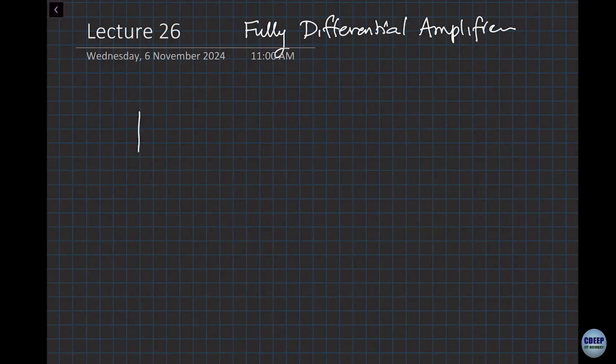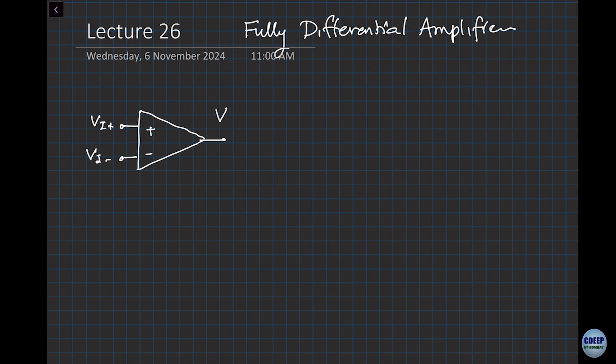If you look at a standard differential amplifier we've learned so far, we had V input plus and V input minus, and then one V output. In this case, the input common mode is rejected. What rejects it? The very foundation — the differential pair — will reject it. And we have a single-ended output, which we like to use.